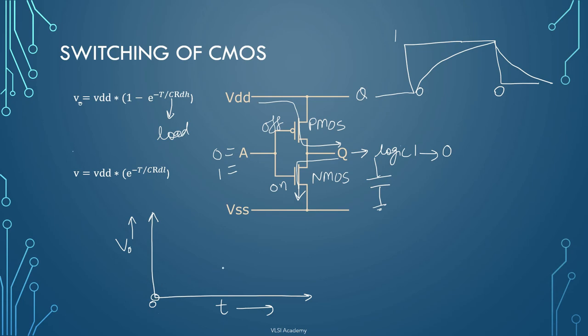Now as time keep on increasing, what will happen is your T will increase. When T increases this net value e raised to the power minus T by RC, this will decrease. But since we are subtracting it from 1, so 1 minus this will actually increase. So net value will be increasing. So output voltage will keep on increasing with respect to time.